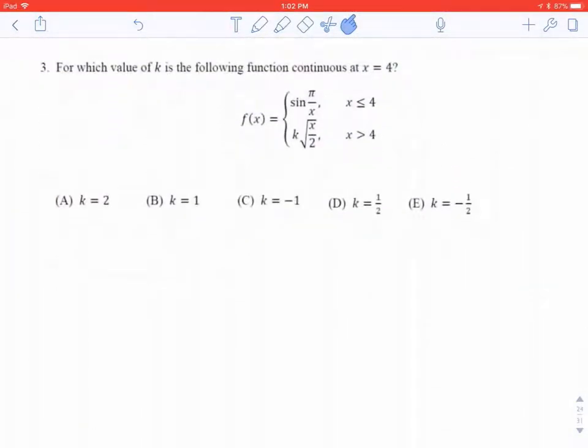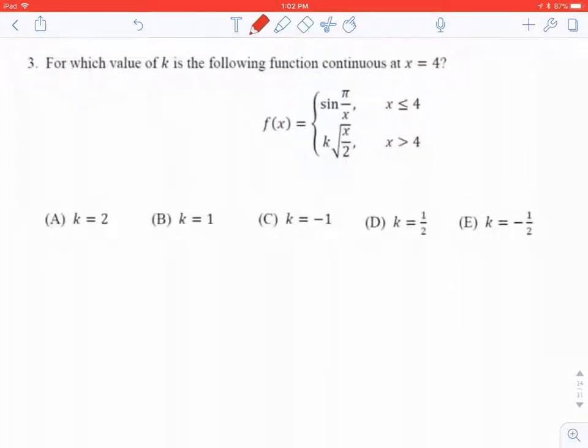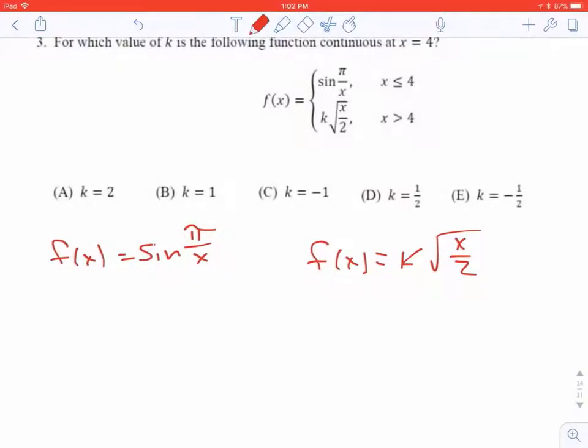Moving on. For which value of k is the function continuous at x equals 4? Well, let's see. So if we take the function sine of pi over x, and we take the function k square root of x over 2, those have to be equal to each other.